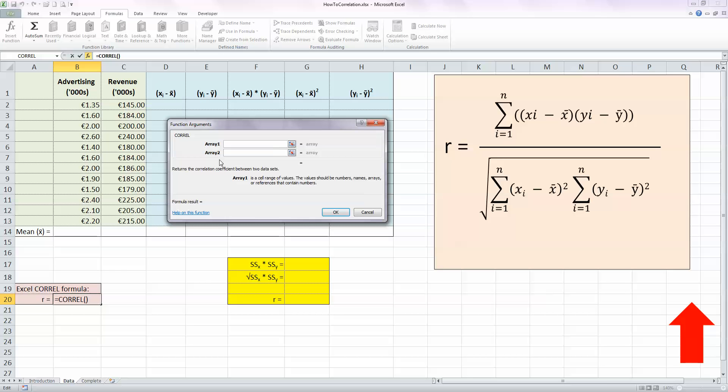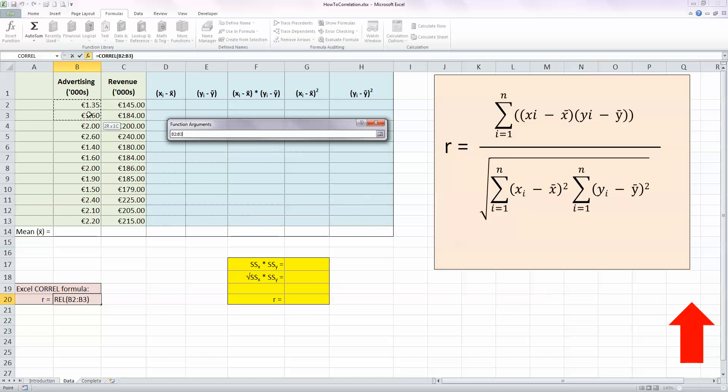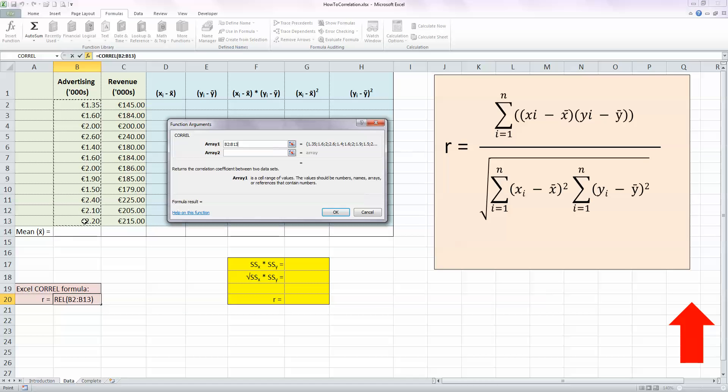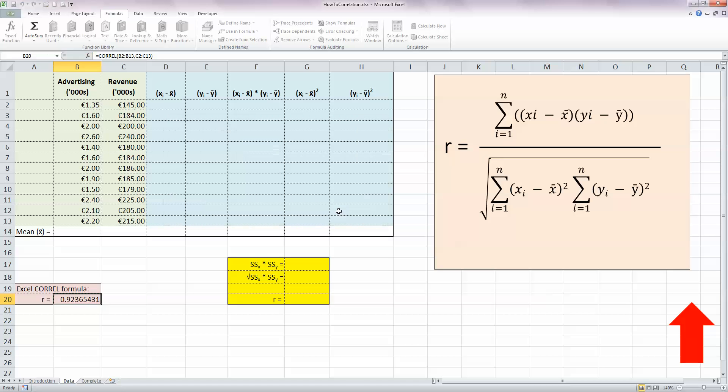And really all I've got to do to tell Excel is which is my first set of data in array 1 and which is my second set of data in array 2. So in array 1 I'm just going to select all my advertising data, so notice I'm just selecting the values and not the heading. And in array 2 I'm selecting all the values for revenue, and they're now displayed in my function argument window, and I can now click OK.